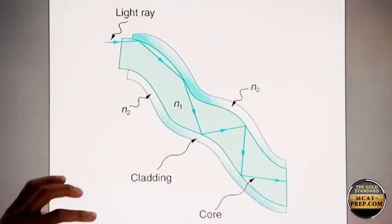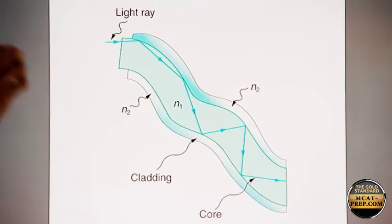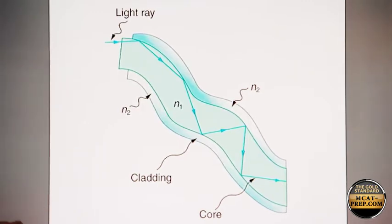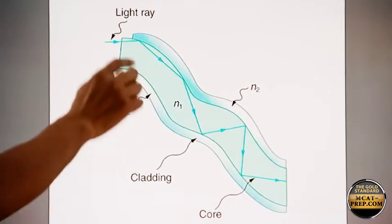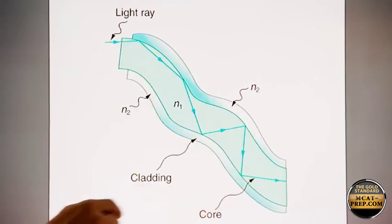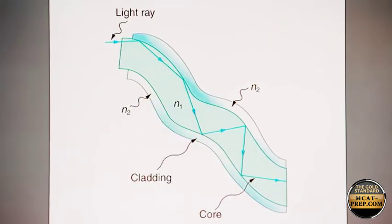Of course, just like the example that we did with water and air, where the light remained in the water, because water has a greater index of refraction, water is the more optically dense medium. Likewise, here, the more optically dense medium is the core. That is why the light rays are retained in the core and are not able to go out.